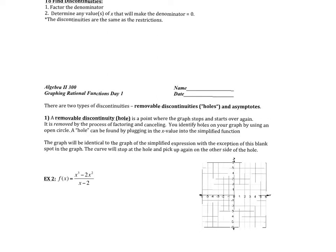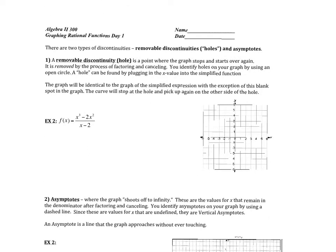There are two types of discontinuities. The first one is called a removable discontinuity, also called a hole. It is basically a point where your graph stops and starts over again. It is removed by the process of factoring and canceling. The way to identify holes on your graph is by using an open circle. To find the coordinate of the hole, you take that x value and substitute it into the simplified function.